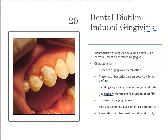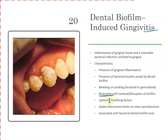There are systemic modifying factors. Sometimes people going through puberty, menstruation, or pregnancy, or even taking birth control pills, can have aggravated gum conditions. The gums can become a little more inflamed. Malnutrition can affect the gums. Leukemia, which is a blood cancer, can also affect the gums. These are systemic body conditions that can play a role in the gingival condition.